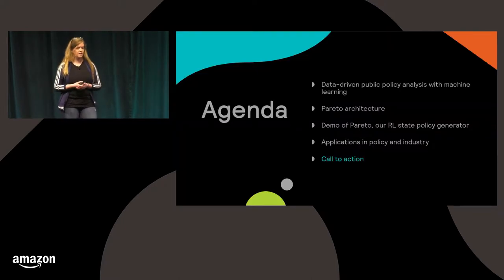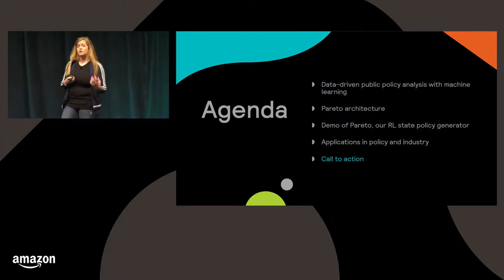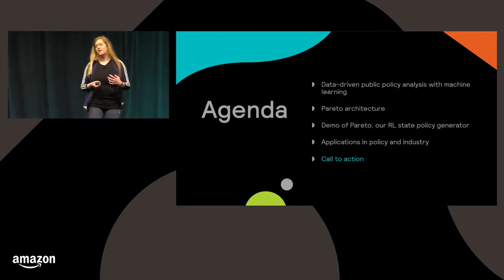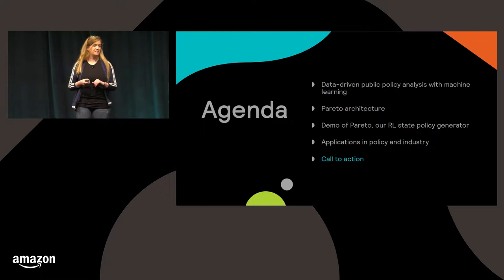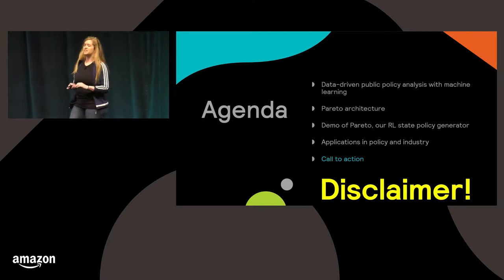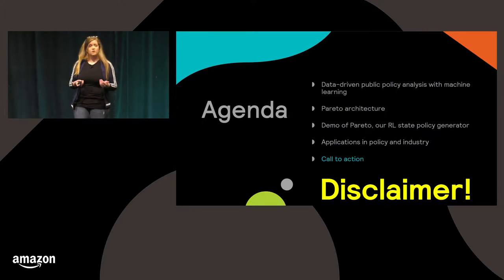Our agenda: first, we'll learn about data-driven public policy analysis, combining classic economic methods such as randomized control trials with reinforcement learning algorithms. Then we'll walk through the architecture of our system. Our agent is named Pareto, after the Italian economist. We'll look at a quick demo of Pareto, our reinforcement learning state policy generator. We'll talk about applications in policy and industry, and close with a call to action. This is a soon-to-be open-source research project.